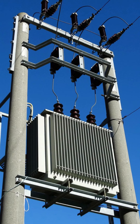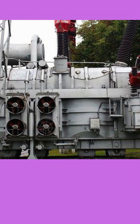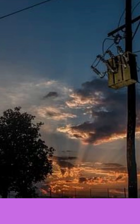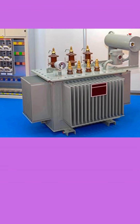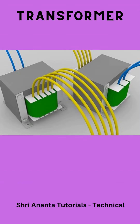The primary function of an electric transformer is to change the voltage level of an alternating current electrical signal while maintaining the frequency. It consists of two or more coils of wire, known as windings, that are electrically isolated but magnetically coupled. The winding connected to the power source is called the primary winding, while the winding connected to the load is called the secondary winding.